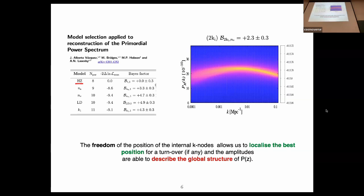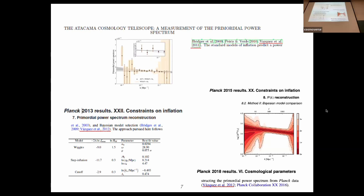So nowadays we know Harrison-Zeldovich is already ruled out. This type of technique allows us to describe the global structure of the spectrum without needing pivot points. Later came WMAP and Planck. Some collaborations used similar techniques - for instance, the Atacama Cosmology Telescope and Planck 2013, 2015, and 2018 started using these techniques.